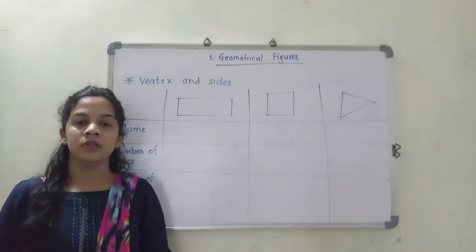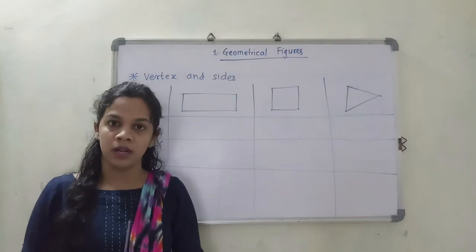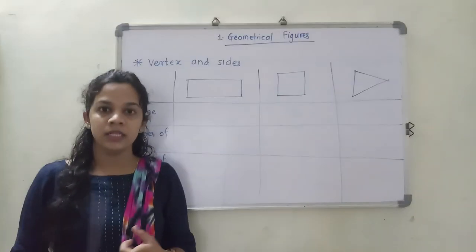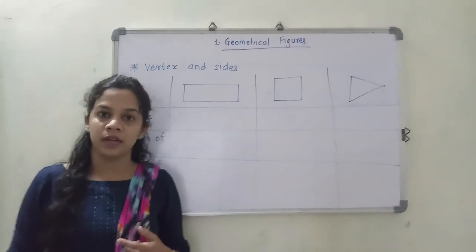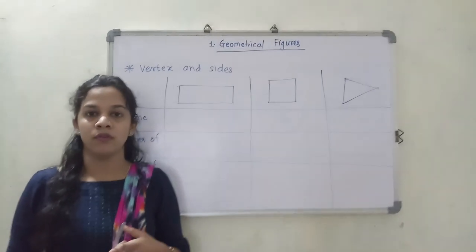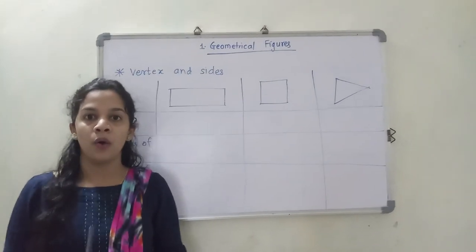We have also studied about circles. For circles, we have seen the radius, the center, the diameter, and we have also seen the chord.